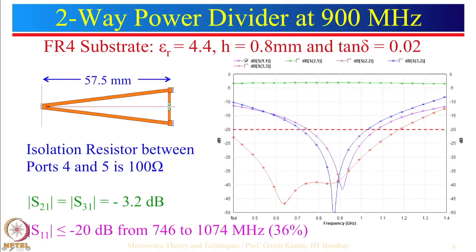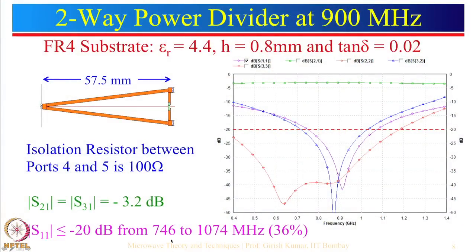This bandwidth is sufficient to cover 900 MHz. We have the GSM 900 band from 890 to 960 MHz, and CDMA from 820 to 890 MHz. So this band covers from 820 to 960 MHz, covering both CDMA and GSM 900 bands with sufficient margin.